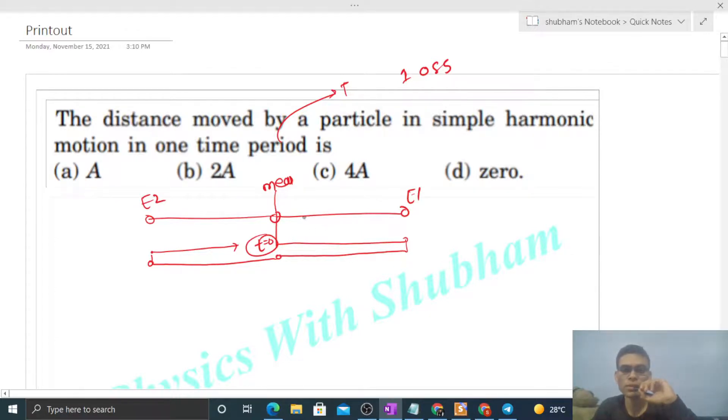That is the actual path of the particle. So how much distance did it travel? This distance is A, right? So first it went distance A from mean to E1...